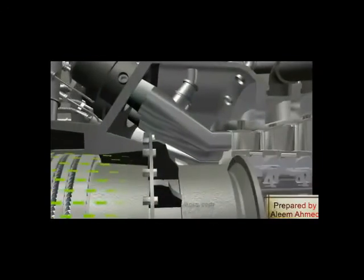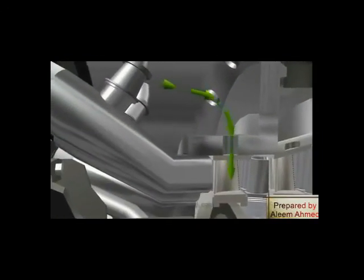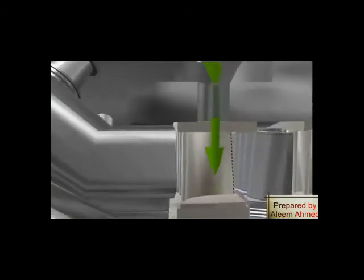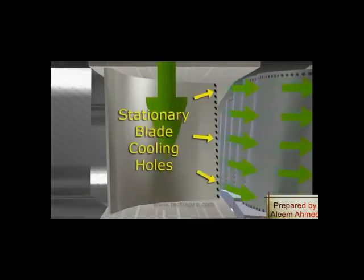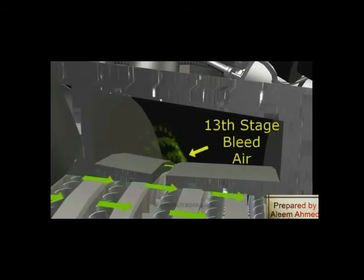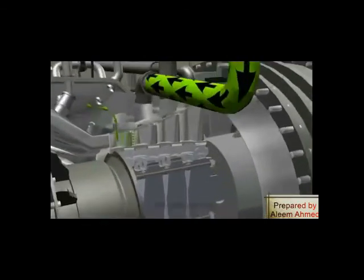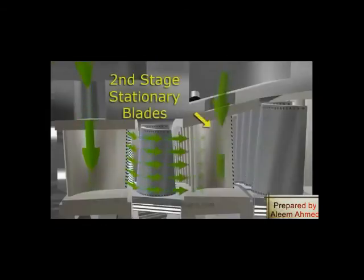Compressor discharge plenum provides cooling for the first stage nozzle. Once the machine is synchronized, the compressor bleed valves, or CBVs, close, and the air is redirected for cooling of the third and second stage nozzles of the turbine respectively.